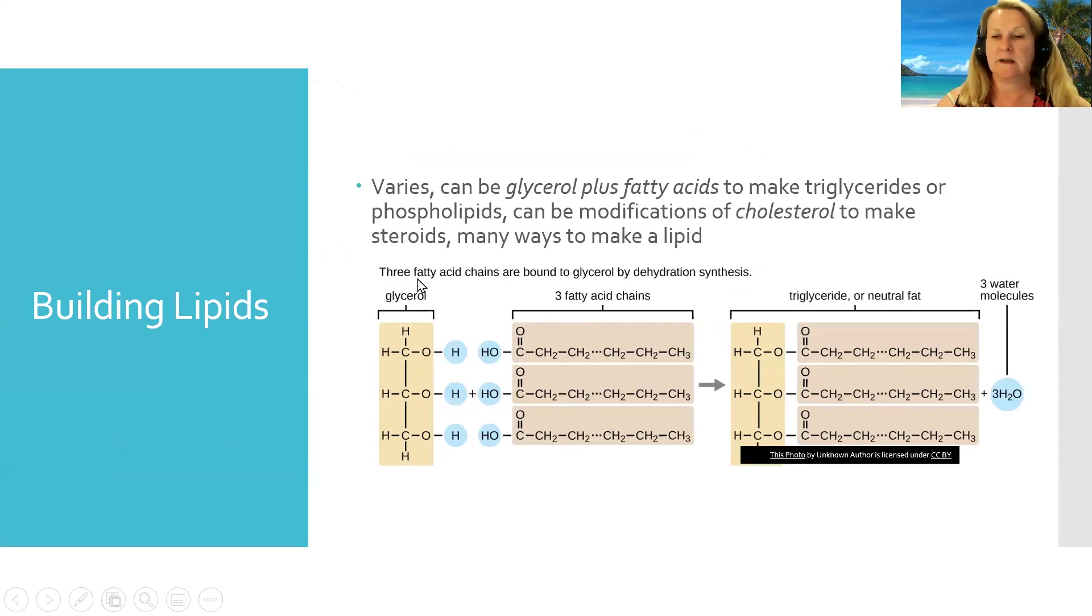To make a phospholipid, you do very much the same thing. You have a glycerol, two fatty acid chains, but instead of the third fatty acid, you have a phosphate group. That's why it's called a phospholipid.